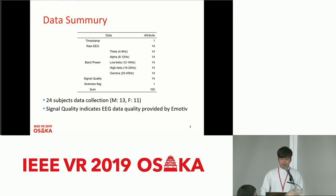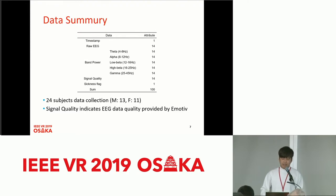The table shown in this slide summarizes the data used in this work. We collect 14-channel EEG data over various bandwidths, with a total of 100 attributes of EEG data collected at each sampling time. We recruited 24 subjects including 13 males and 11 females for the EEG data collection. Signal quality indicates the sensing quality of the EEG signal provided by Emotiv.